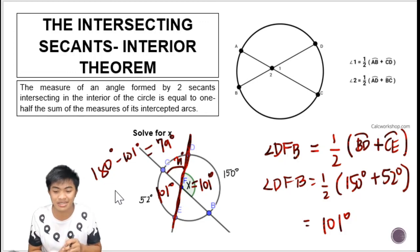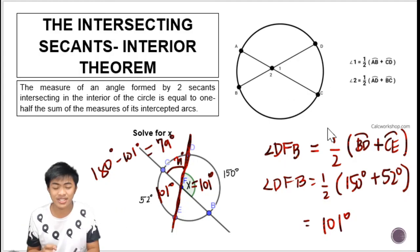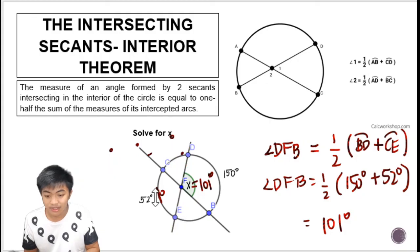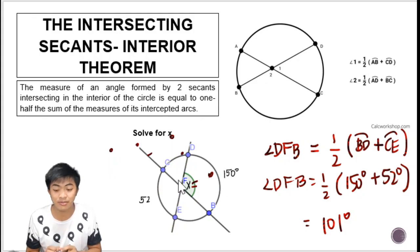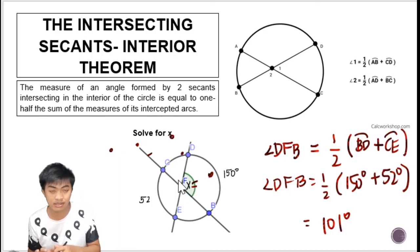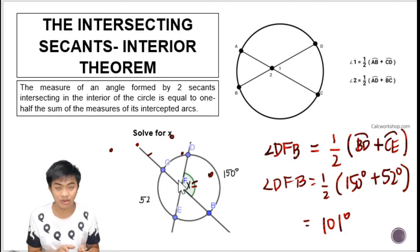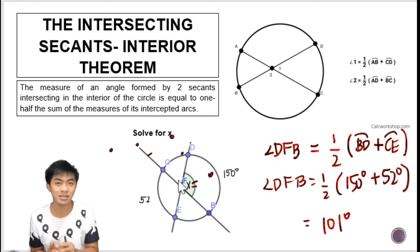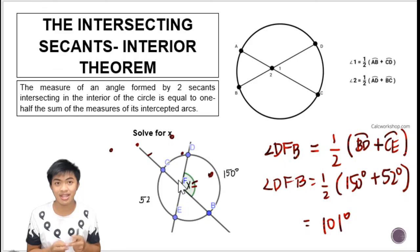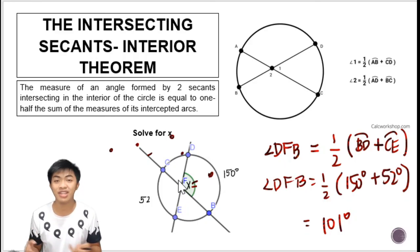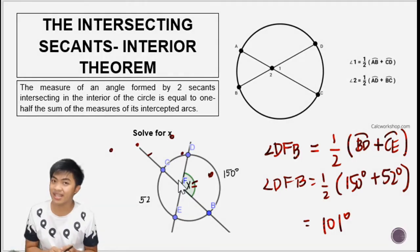Those are the theorems regarding the relationship of angles formed by lines and their corresponding intercepted arcs. We applied knowledge from previous grade levels to solve these. In the next lesson, we'll talk about the Power Theorem — instead of angles, we'll be discussing the lengths of segments formed by the intersection of secants, tangents, and chords. See you in the next video!